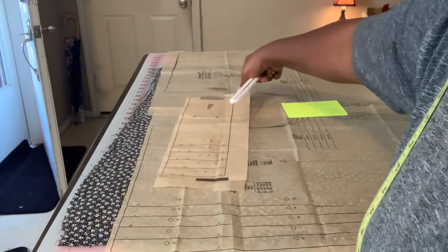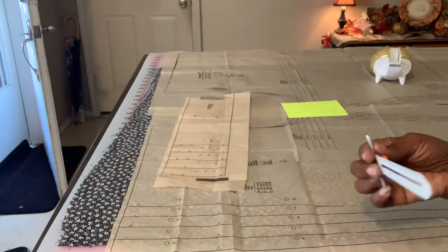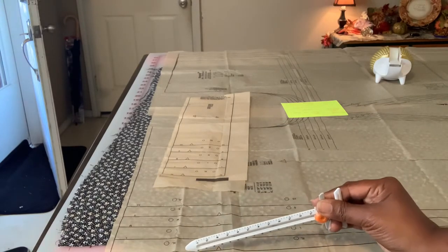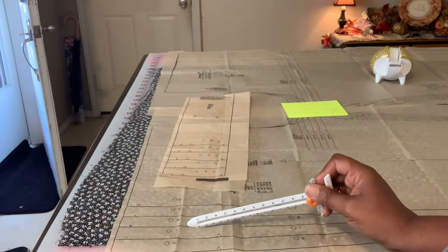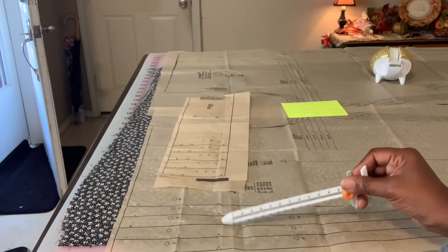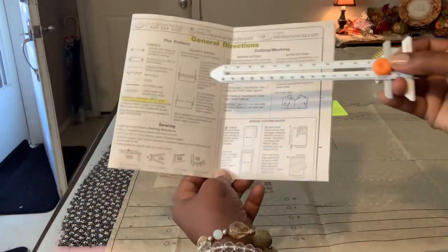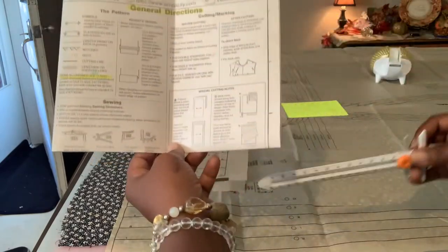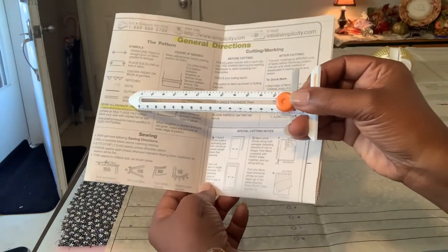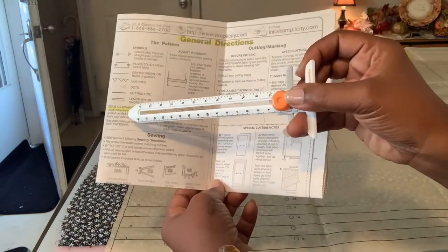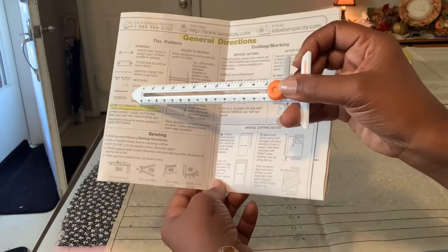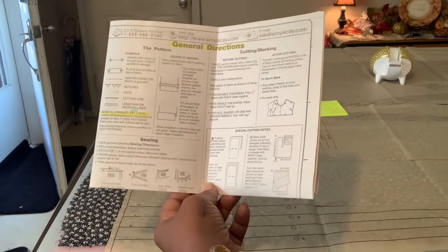The cutting line is the solid outside line on any pattern piece. That solid line is the cutting line. Now on most patterns that have different sizes in the pattern, you'll have several different solid lines and you'll have yours usually marked. You'll know what your line is based on your measurements and which size you're using in your pattern. Again, the solid lines are the cutting lines. These little, on this particular pattern, the lengthen or shorten line, this is an adjustment line. That's where you'll lengthen or shorten the pant legs, for example.